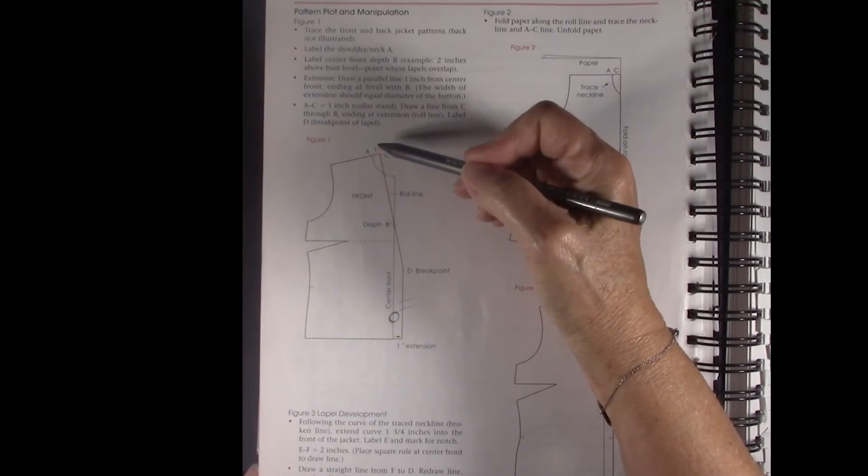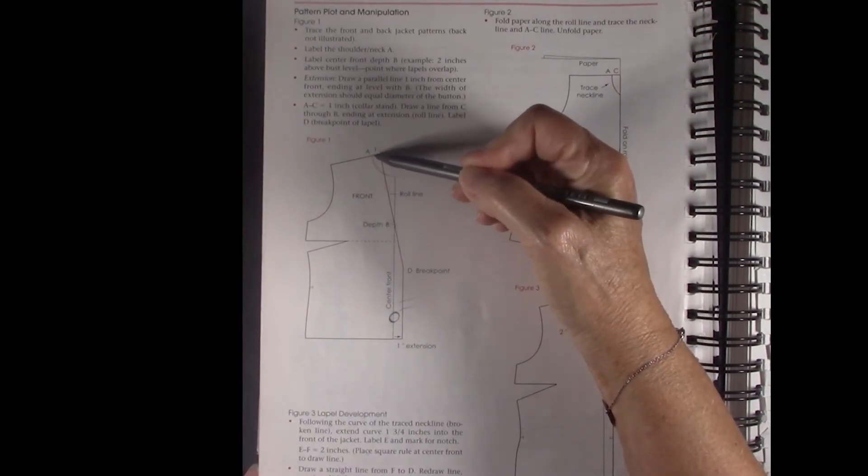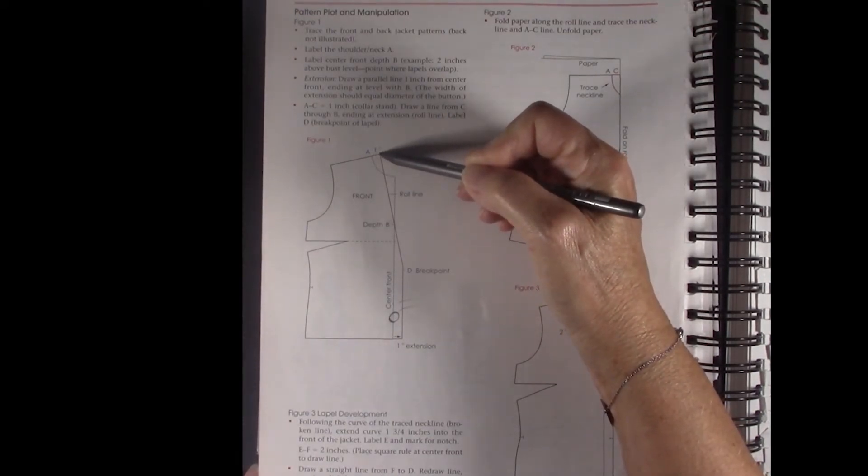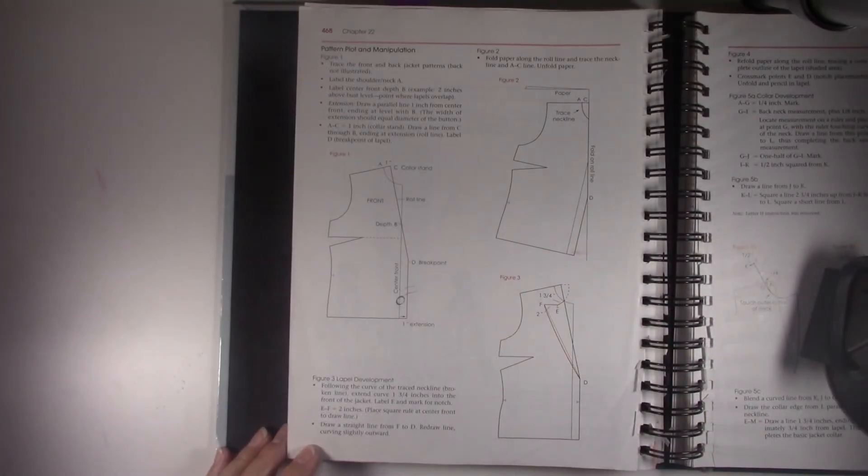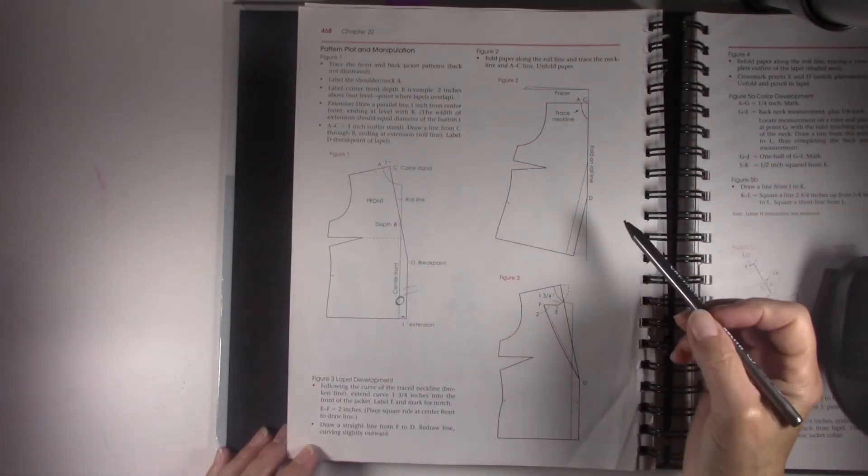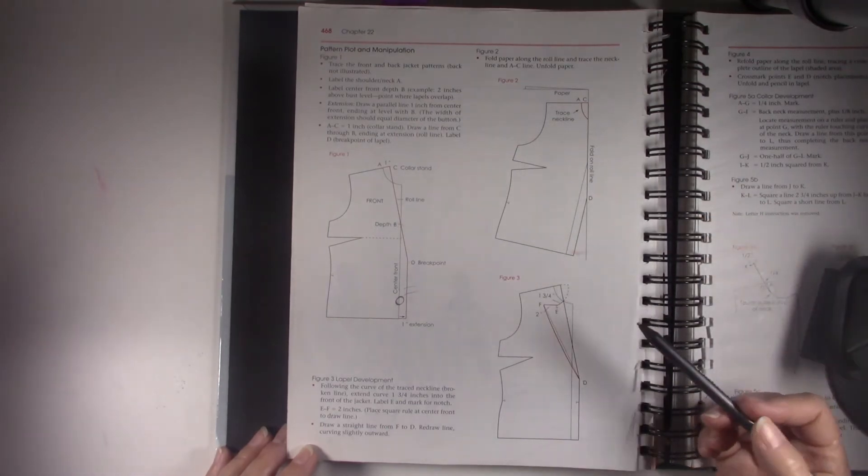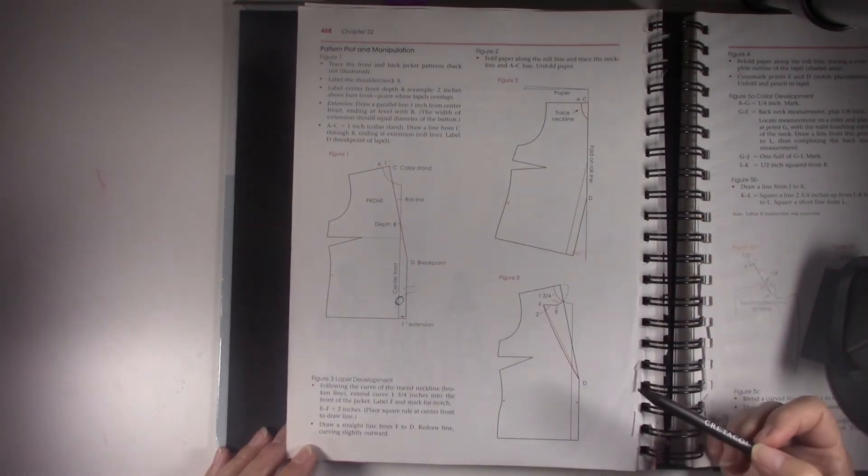So then you have the collar stand, the allowance for the collar stand then gets connected from the shoulder to the breakpoint. And then of course you're going to turn your pattern to fold your paper so that will end up being your extension for your lapel.